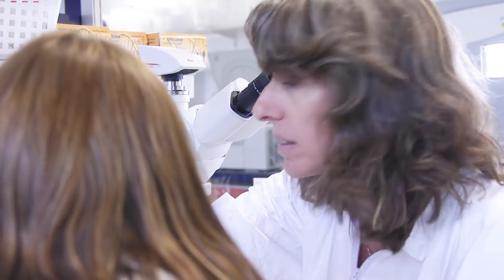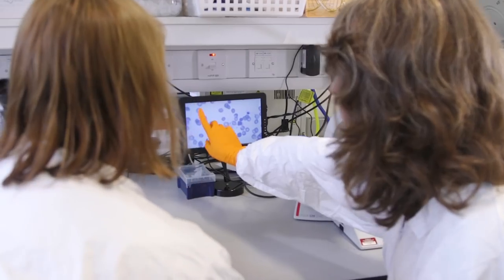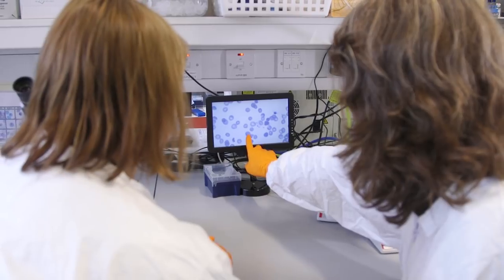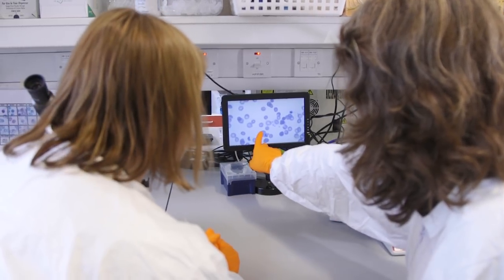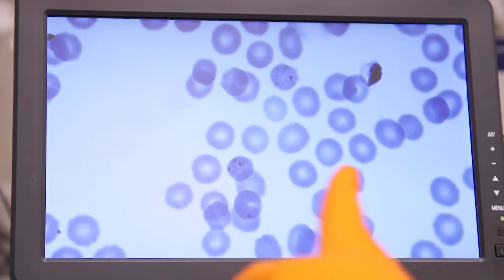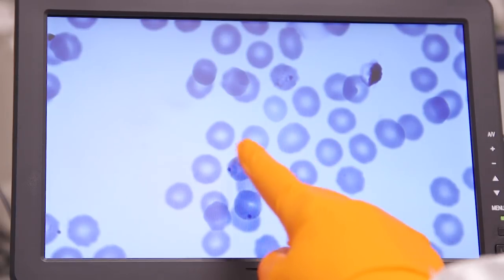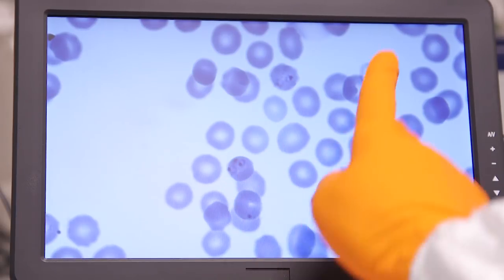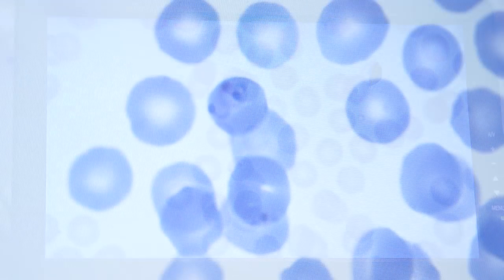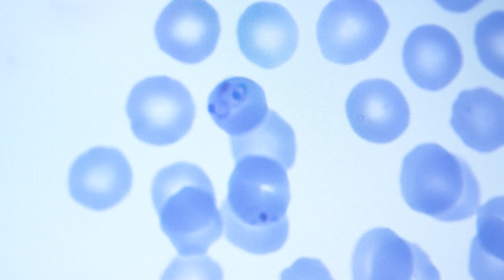On the microscope, what we look for is the stages of the parasite that are present in the culture. We see the red blood cells in light blue, and within the red blood cells we can see darker purplish forms of the parasite.